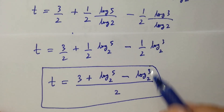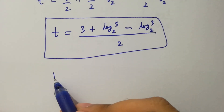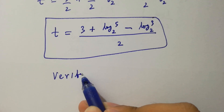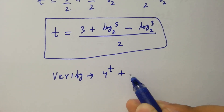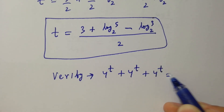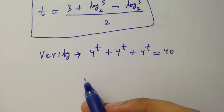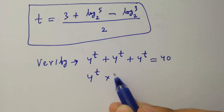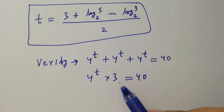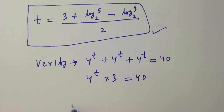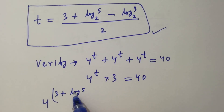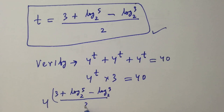So we have the value of T. In the next step, I am going to verify: 4 to the power T plus 4 to the power T plus 4 to the power T equal to 40, which is the same as 4 to the power T times 3 equal to 40, by factoring 4 to the power T. Put the value of T: 4 to the power of 3 plus log 5 to the base 2 minus log 3 to the base 2 over 2, times 3 equal to 40.